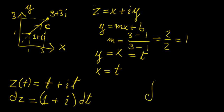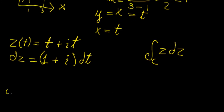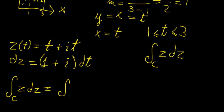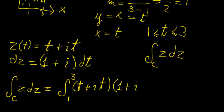Now what would be the integral of the function f(z) = z along that path c? We look at the integral of z dz. Substituting z by z(t), the limits of integration on a parametric curve are always the same limits as the independent variable. Since x ranges from 1 to 3, t ranges from 1 to 3 as well. So we have the integral from 1 to 3 of (t plus it) times (1 plus i) dt.